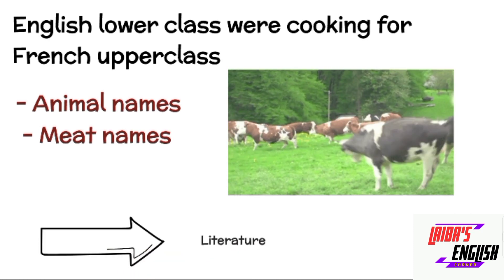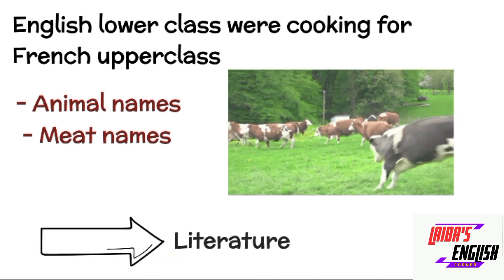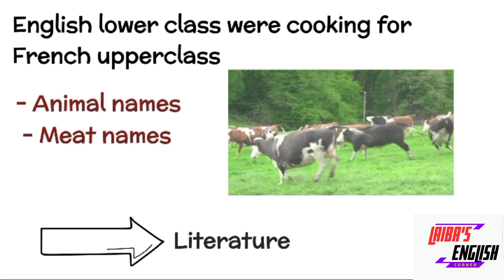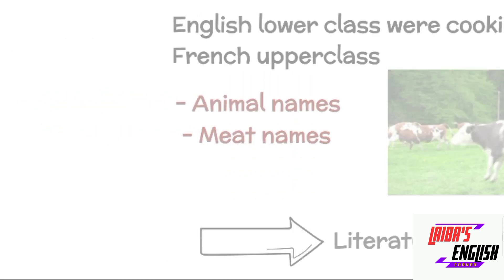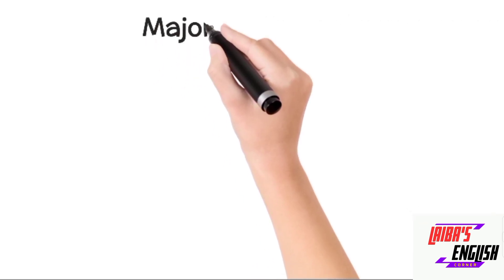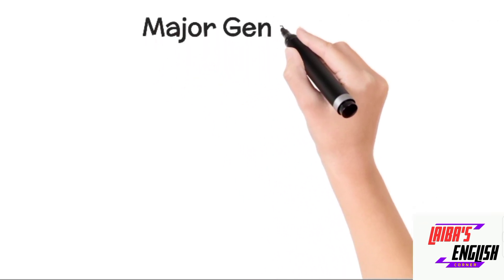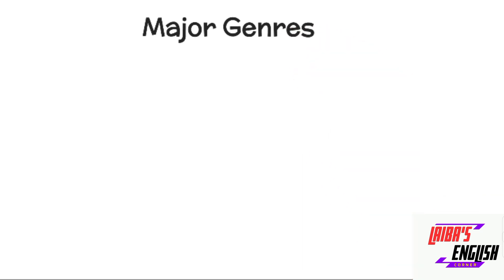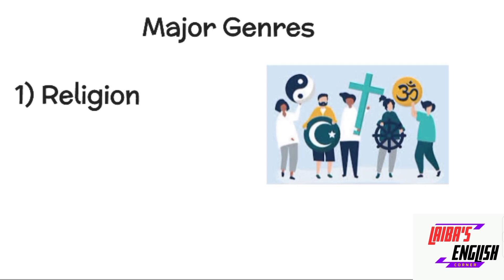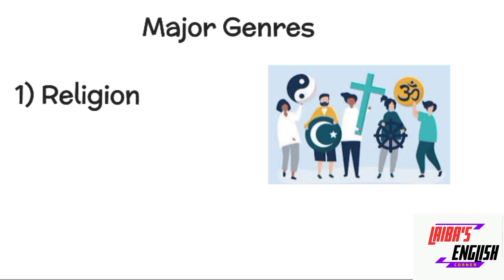Now we are clear with the background of the Anglo-Norman period — how they invaded and so on. Now we will look at the literature of the Anglo-Norman period from 1066 till 1580. The major genres present in the Anglo-Norman period — number one is religion. As seen in the previous video on the Anglo-Saxon period, poetry and prose were limited to religion and politics. Similarly, here in the Anglo-Norman period, genres were limited to religion.